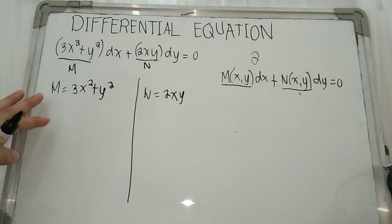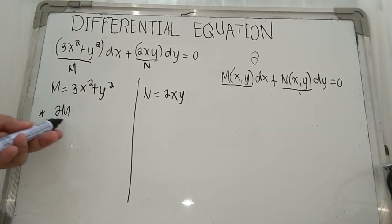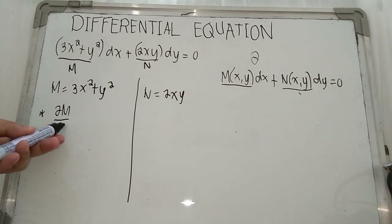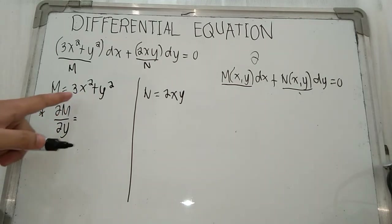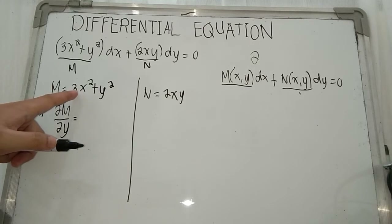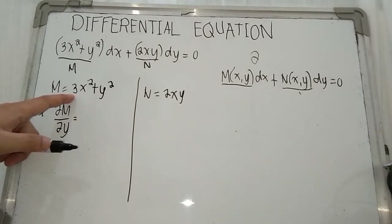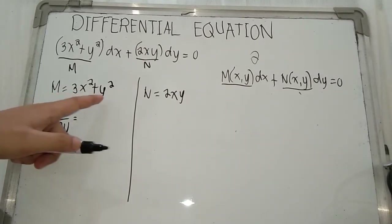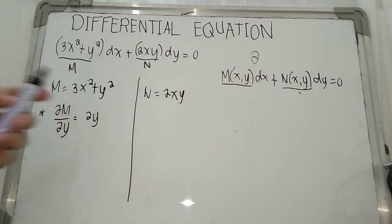Now we are going to get the partial derivative of M with respect to y. We treat x as a constant, so 3 times a constant is a constant, and the derivative of that first term becomes 0. The derivative of y squared is 2y using our power rule.